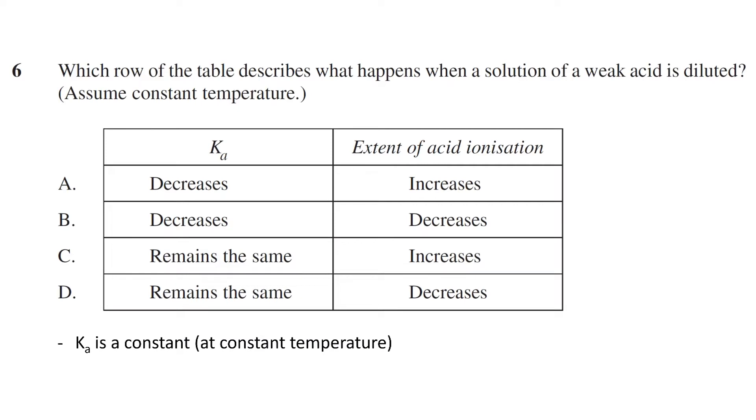due to the fact the Ka value is a constant and determining the shift in equilibrium point using Le Chatelier's principle, implying that more acid ionizes, we can see the answer is option C.